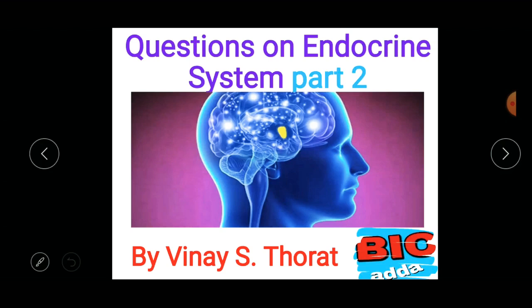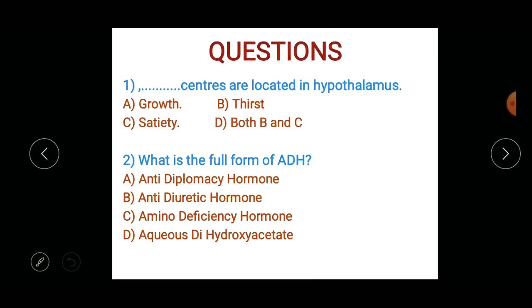First question: The blank centers are located in the hypothalamus. Options: growth, thirst, satiety, or both B and C.